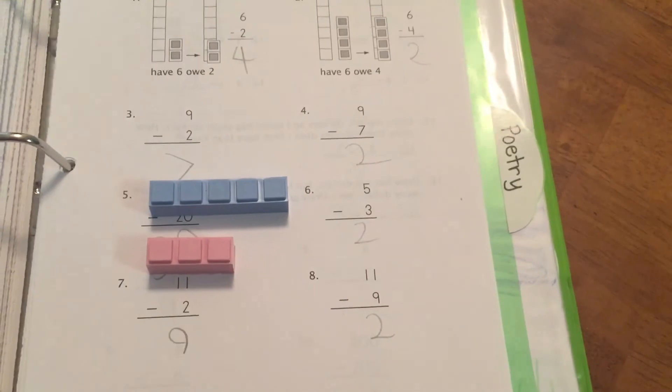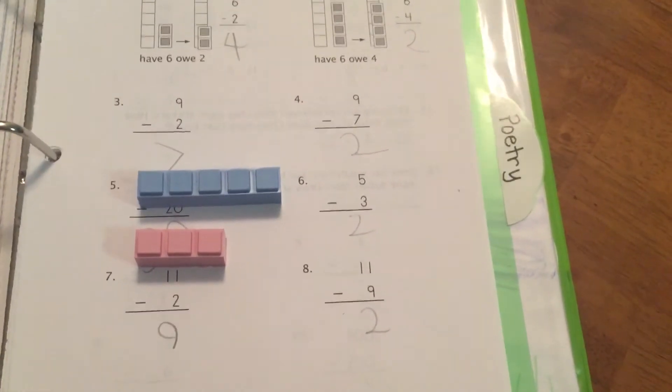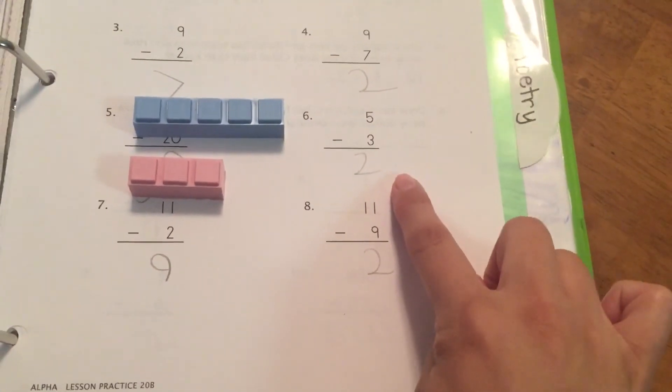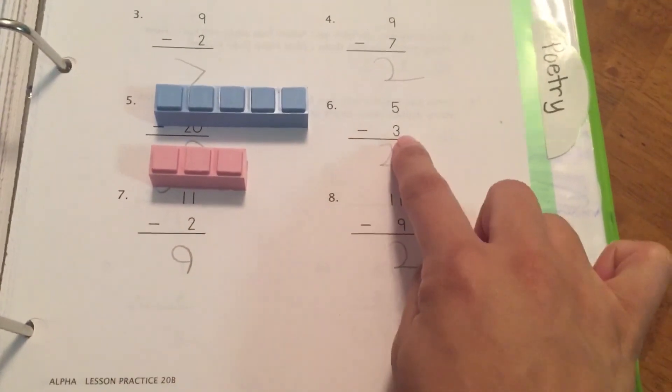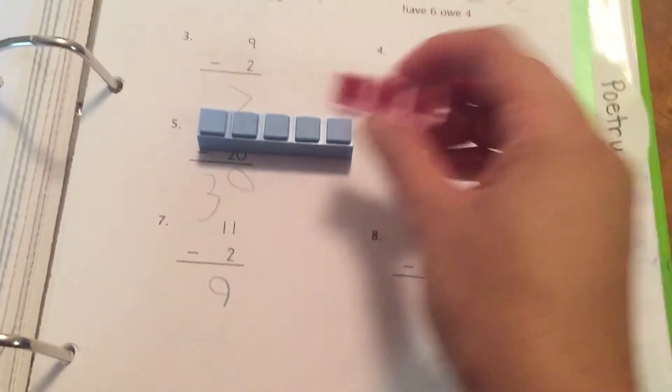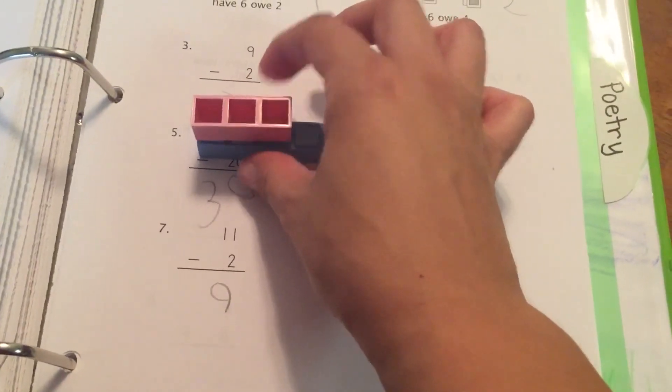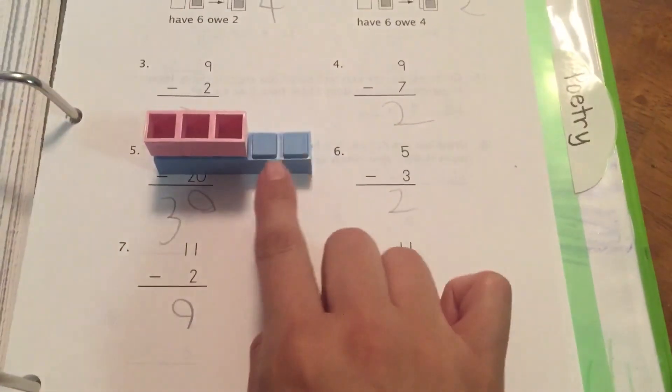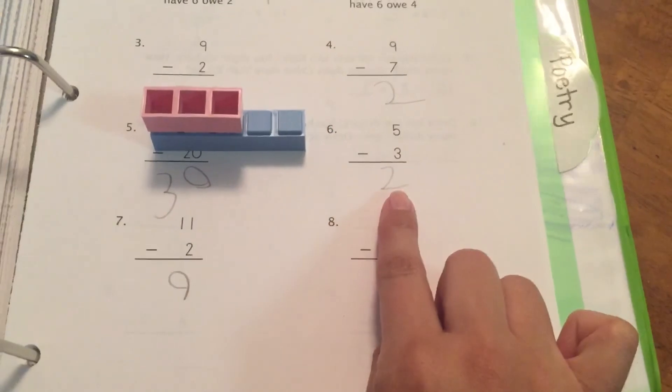For subtraction, what you do is, for this problem right here, the number that you're taking away, you turn the blocks over. That means take away, and then you see how many blocks are left.